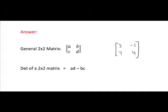So to get the determinant of our matrix, it is A times D, which is 3 by 4, minus B by C, so B is minus 1, and C corresponds to 7.